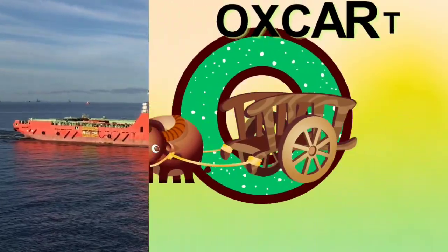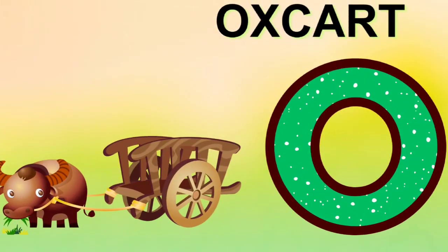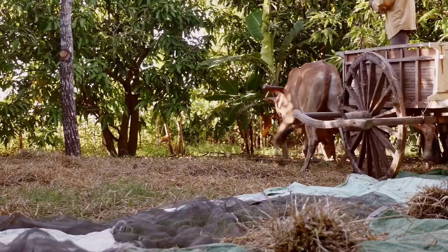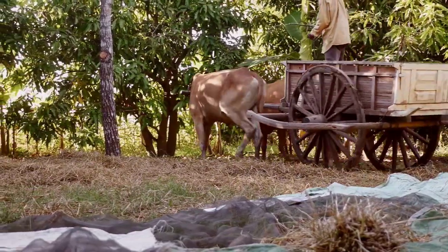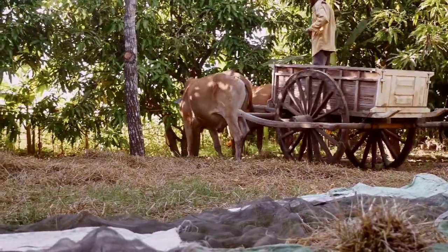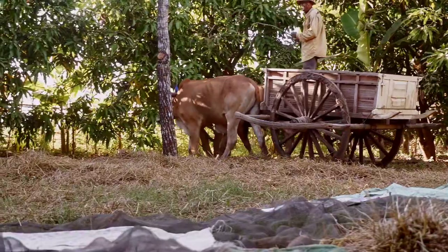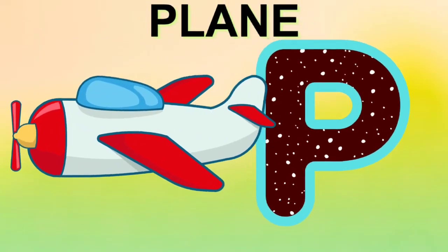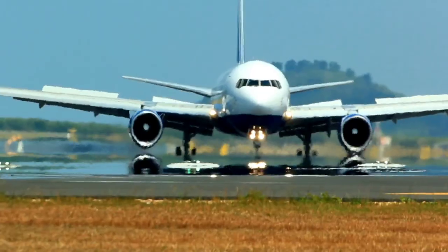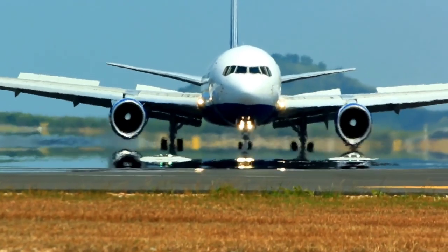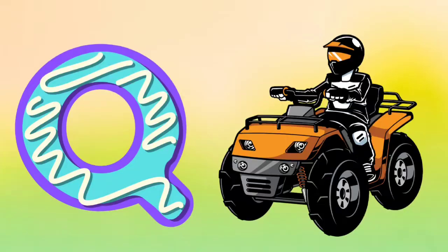O is for Ox Cart. A, A. Ox Cart. O is for Ox Cart. A, A. P is for Plane. P, P. Plane. P is for Plane. P, P.